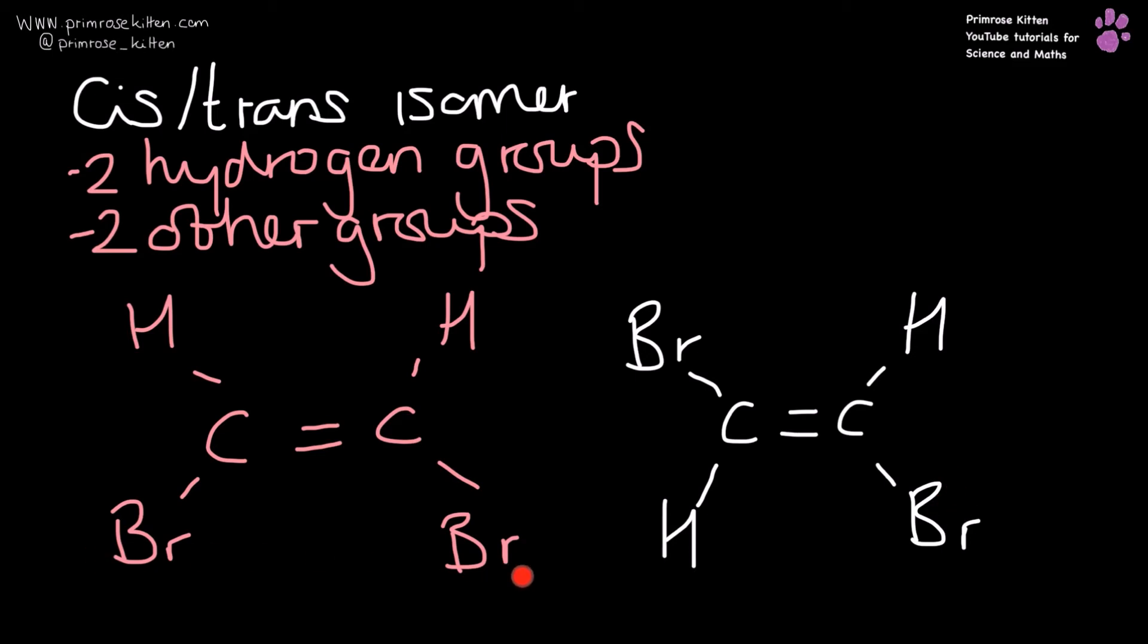Now here they are on the same side. If they are on the same side, it is going to be a cis isomer. And if they are on different sides, it is going to be a trans isomer.